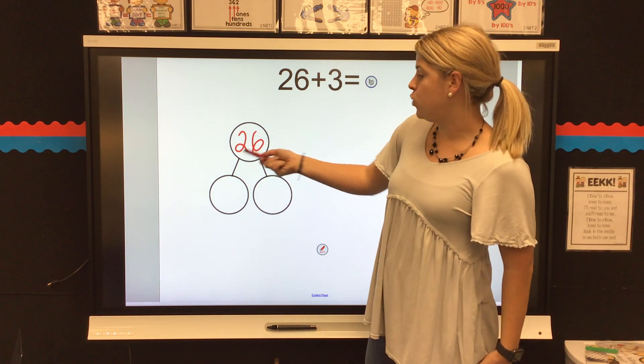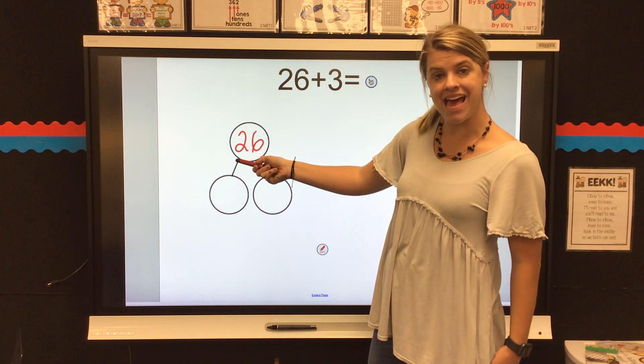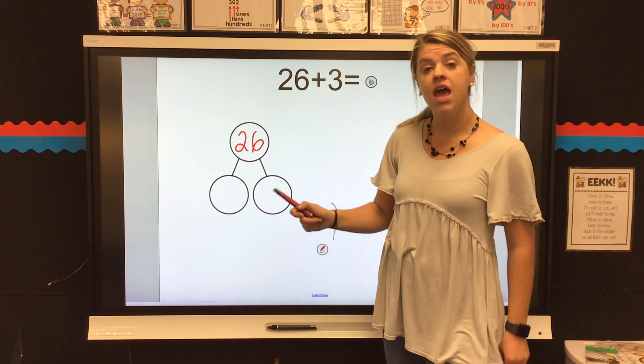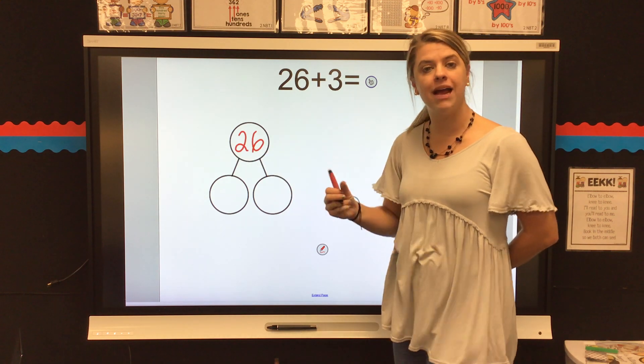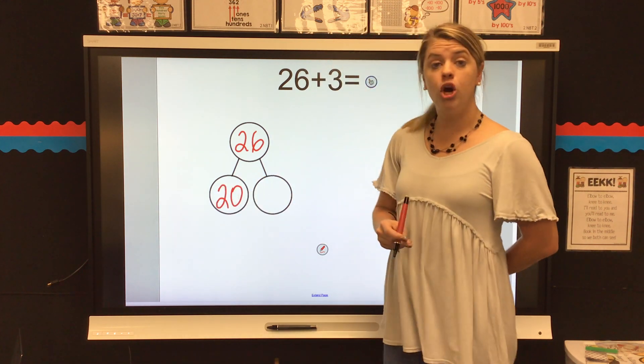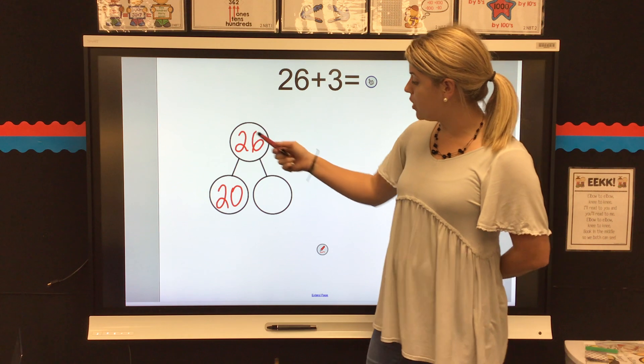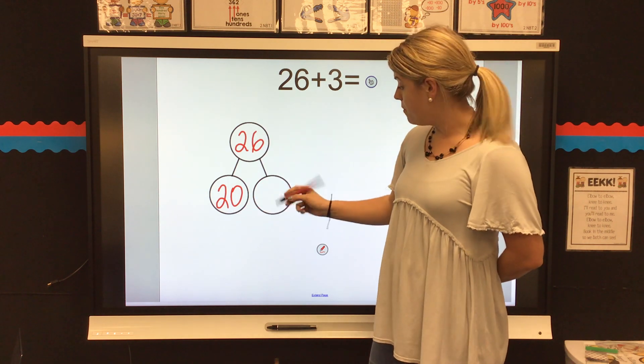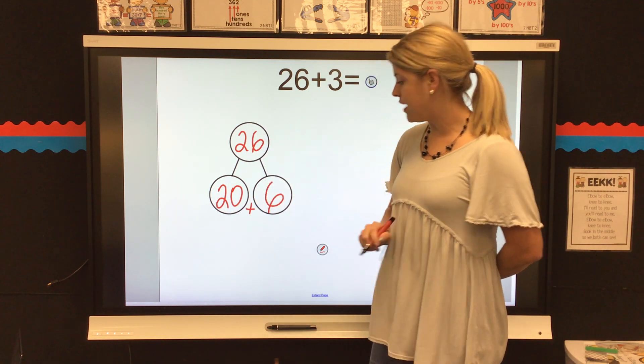I know that my number 26 has two tens and six ones. Two tens, remember we can write that as 20. So, the number 26 can be broken down into 20 plus 6.